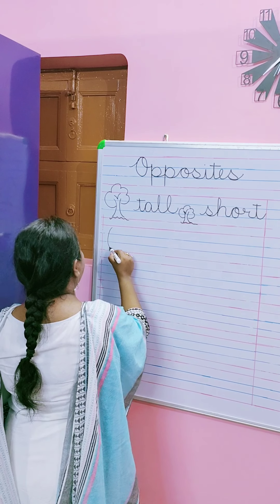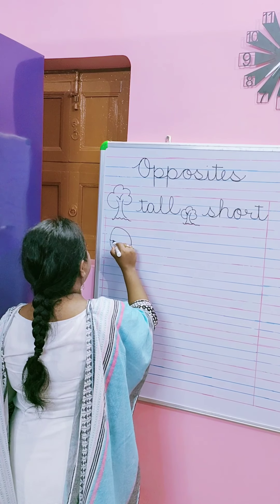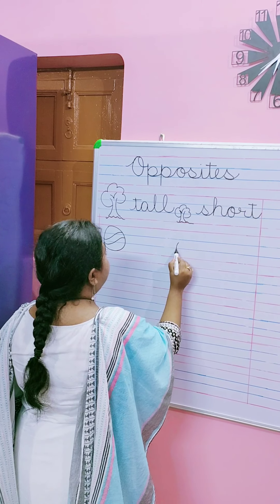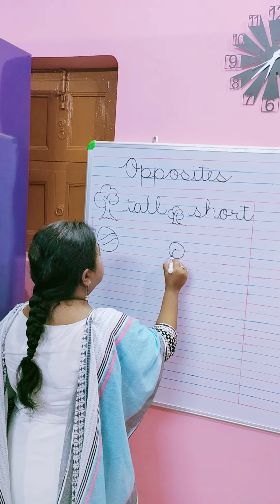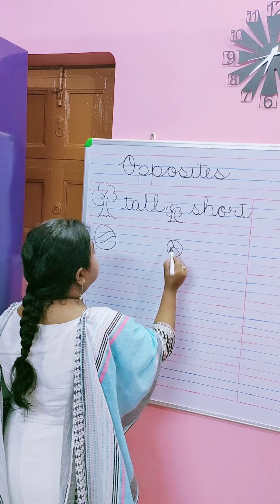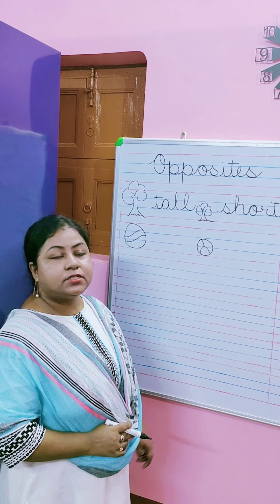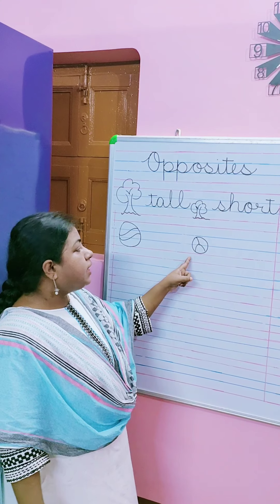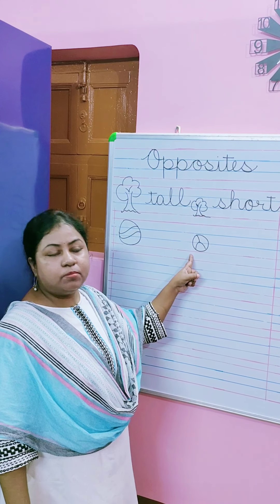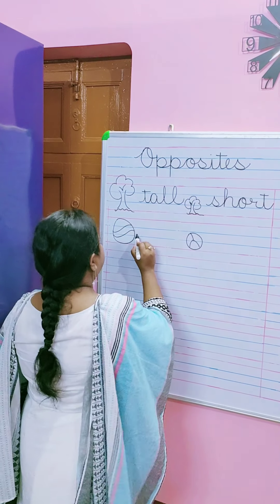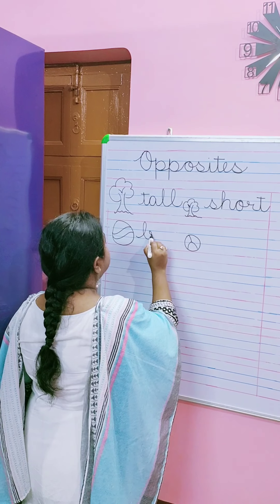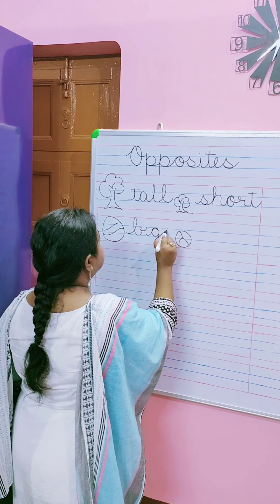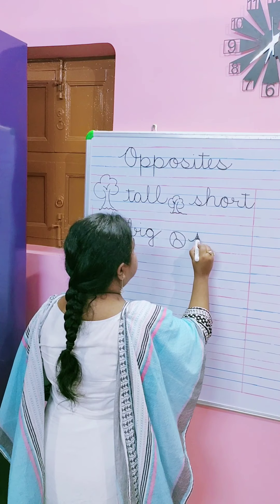Now I will draw a ball. One more ball. So you can see this is a big ball and this is a small ball. So I will write big and small.